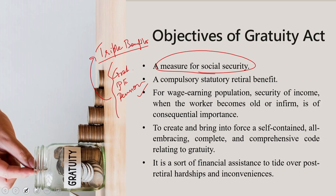The significance of this legislation lies in the acceptance of the principle of gratuity as a compulsory statutory retiral benefit. This act specifically accepts in principle the compulsory payment of gratuity as a social security measure to the wage-earning population in industries, factories, and establishments, and the main purpose is to help the workman after retirement, whether due to superannuation, physical disablement, or impairment.